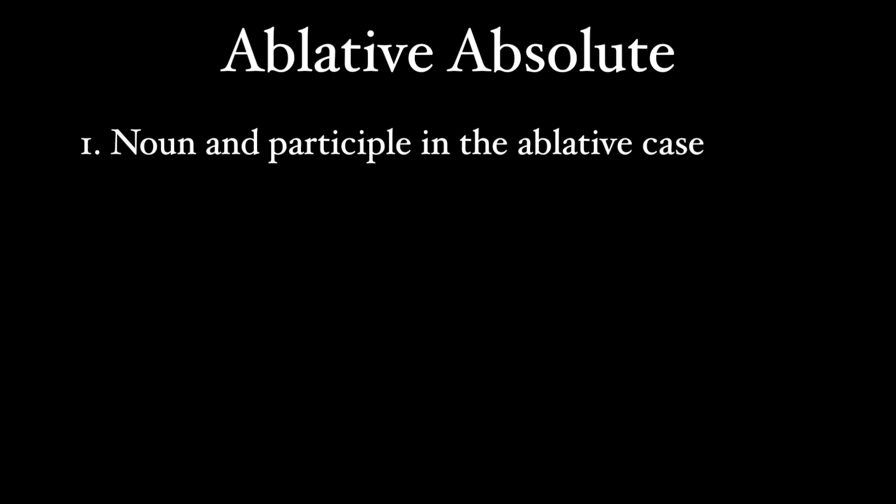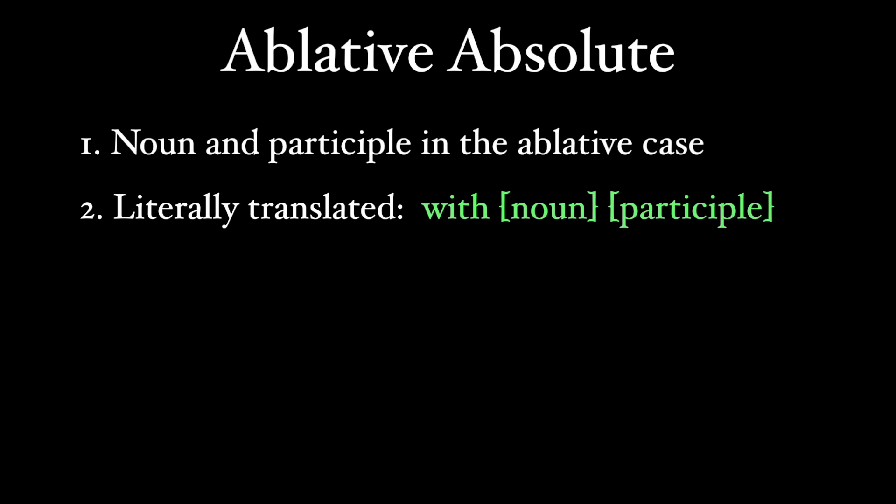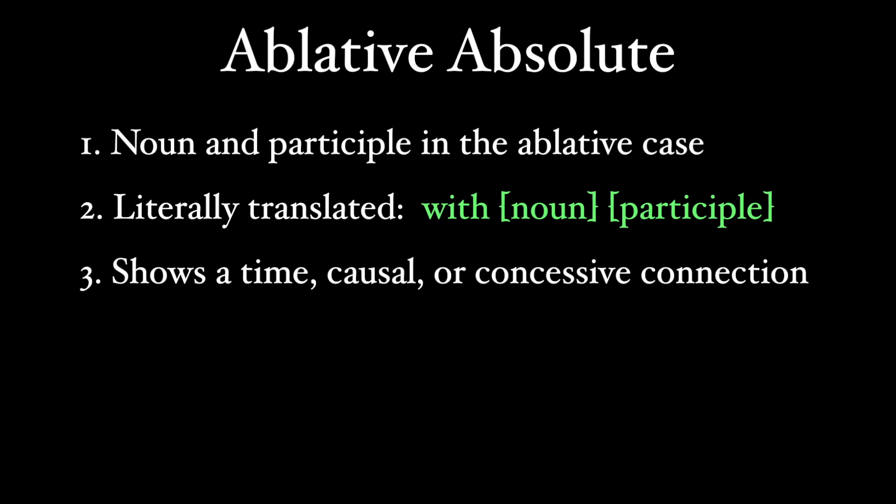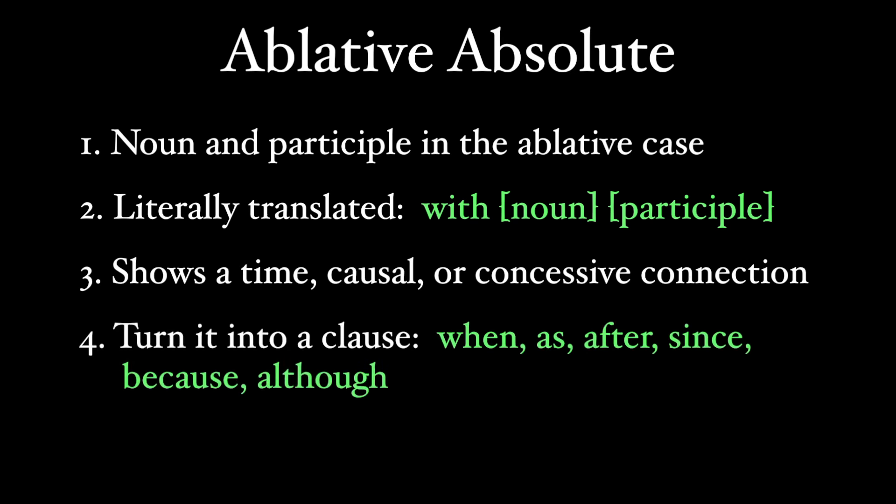So let's summarize. The ablative absolute consists of a noun and participle in the ablative case, although sometimes the participle can be replaced by another noun or adjective, as we saw with the consuls' names. You can literally translate it as 'with the noun, the participle' — like 'with the army having been defeated' or 'with the ship sailing on the sea.' The ablative absolute can show a time connection, but it can also be causal or concessive. We can turn the phrase into a clause introduced by 'when,' 'as,' 'after,' or if causal, 'since' or 'because,' or if concessive, 'although.'